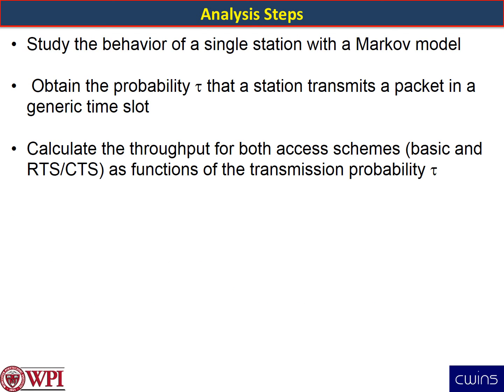The analysis steps in the paper follow these steps: he first studies the behavior of a single station using a Markov model, which gives you the probability tau — the probability that a station transmits a packet in a generic time slot. Then he calculates the throughput for both Carrier Sense Multiple Access with collision avoidance, which he commonly refers to as the basic method, and for request-to-send clear-to-send, as a function of this probability tau.